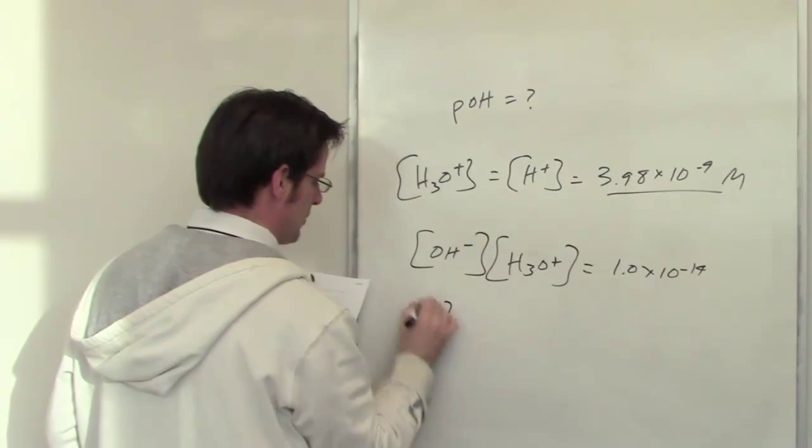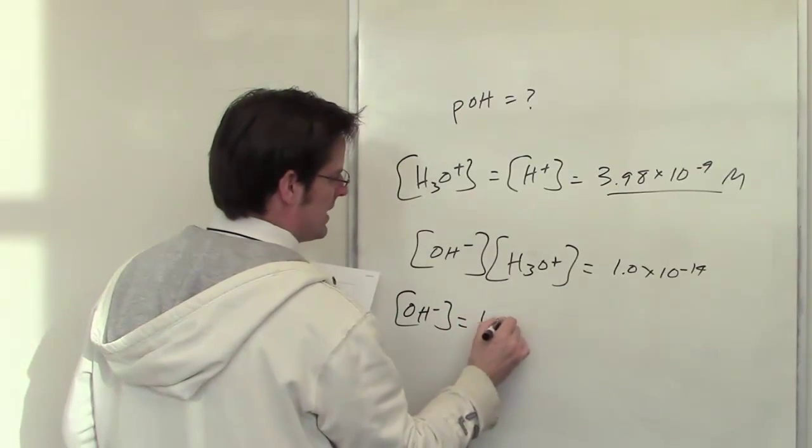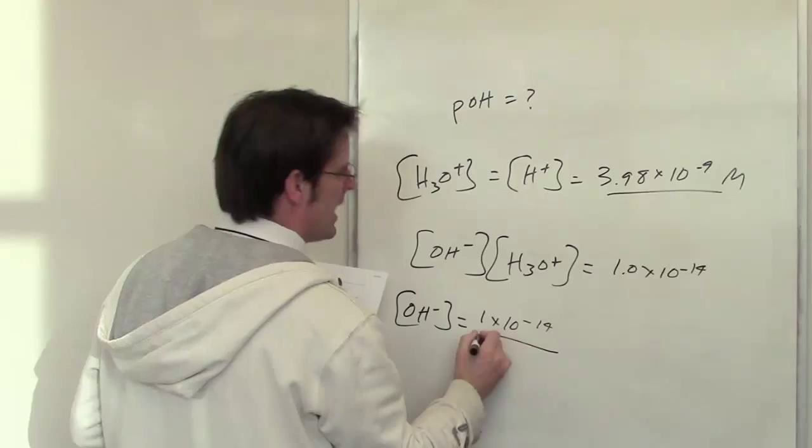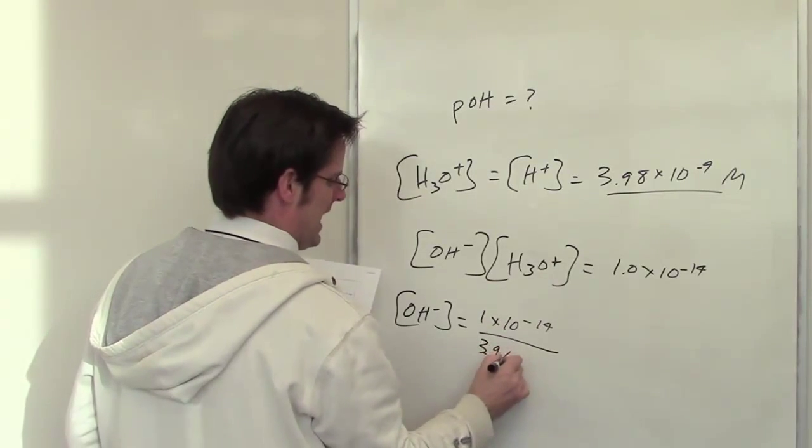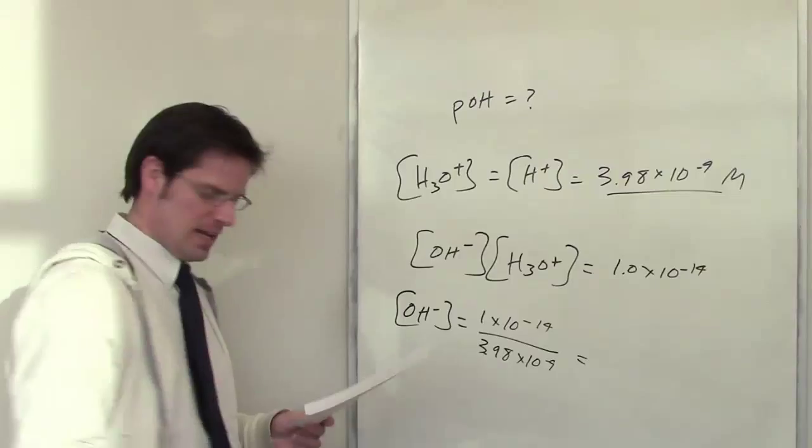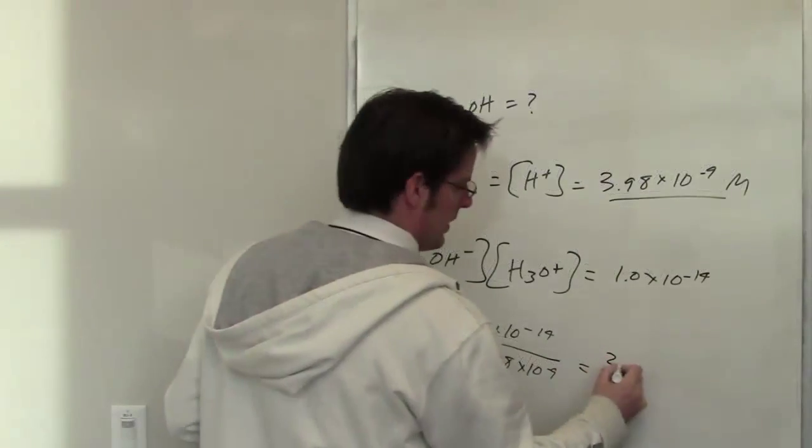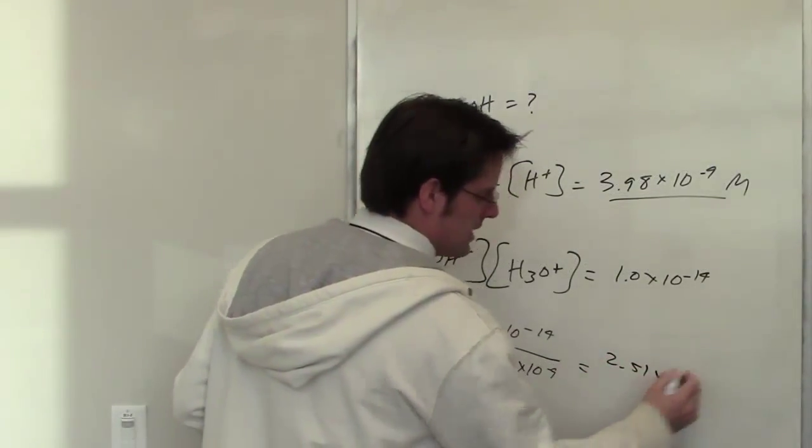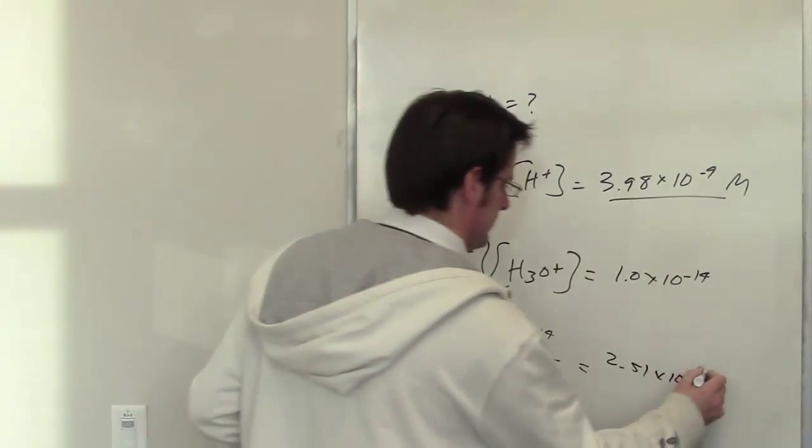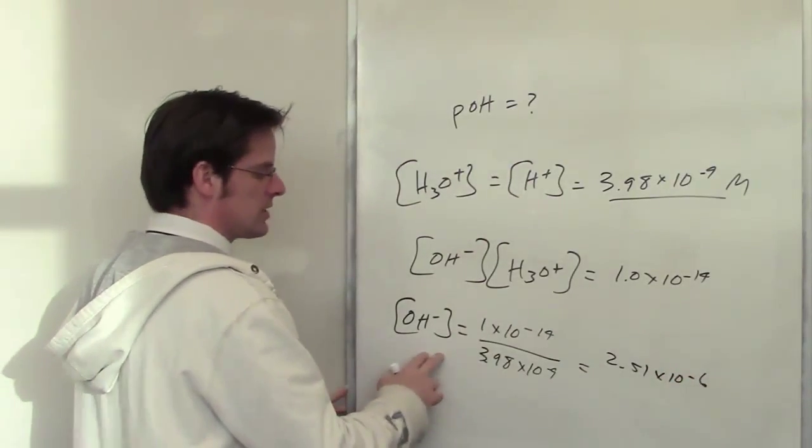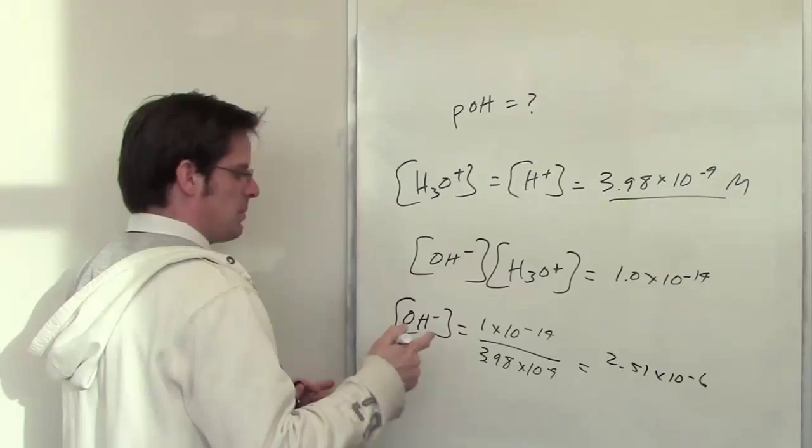OH minus algebraically is going to be 1 times 10 to the negative 14th divided by 3.98 times 10 to the negative 9th. I throw that into my calculator and I end up getting 2.51 times 10 to the negative 6th. That's my hydroxide ion concentration. What is the pOH?